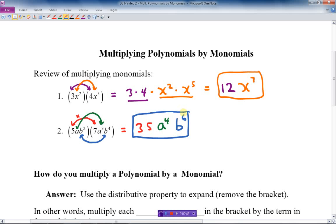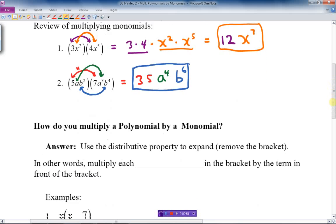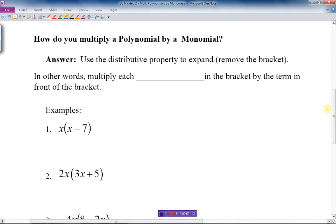How do you multiply a polynomial by a monomial? The answer is use the distributive property to expand or remove the bracket. Distributive property means you multiply.